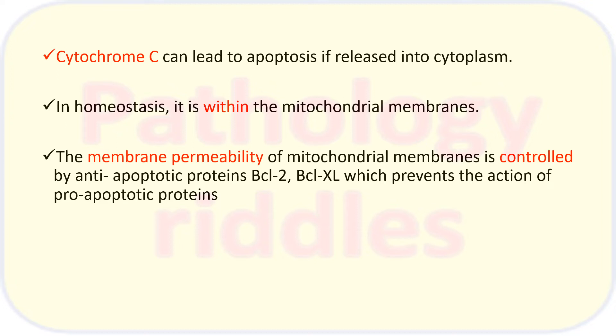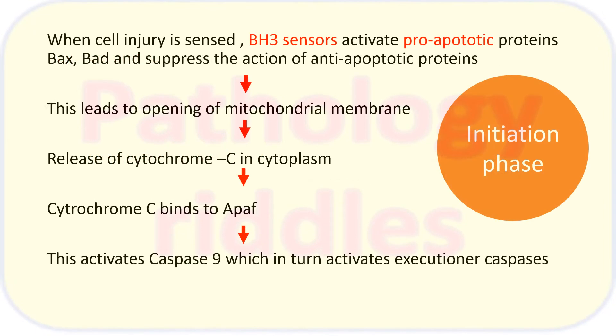BCL-2 and BCL-XL prevent the action of pro-apoptotic proteins. When the cell is injured, BH3 sensors detect this and activate pro-apoptotic proteins such as BAX and BAD, which suppress the anti-apoptotic proteins BCL-2 and BCL-XL. This leads to opening of the mitochondrial membrane.